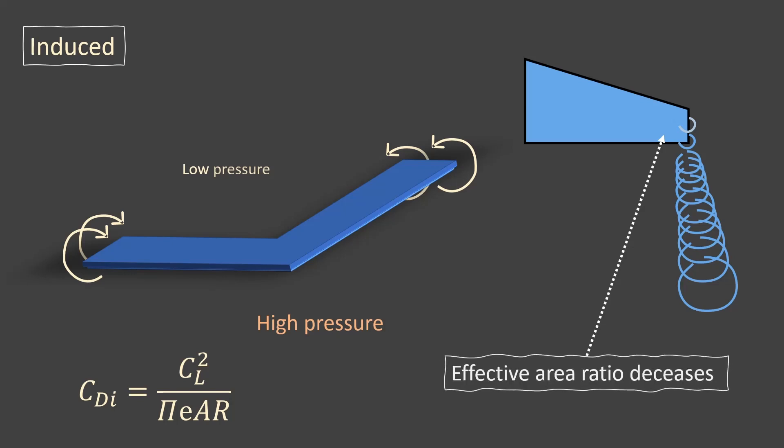The wing tip vortices increases as the angle of attack increases since the pressure difference between the top and bottom surface of the wing increases with increase in the angle of attack.